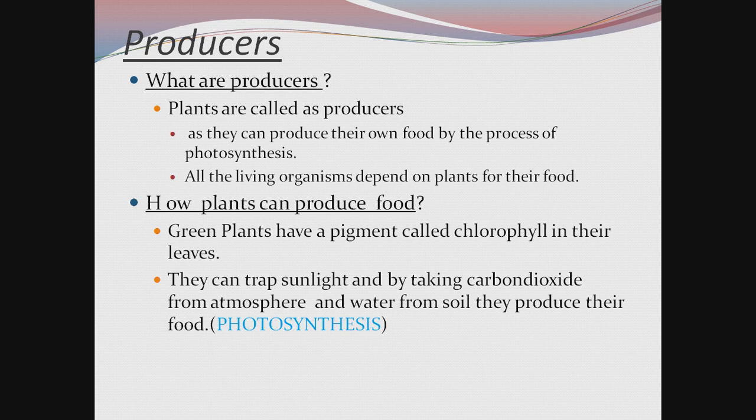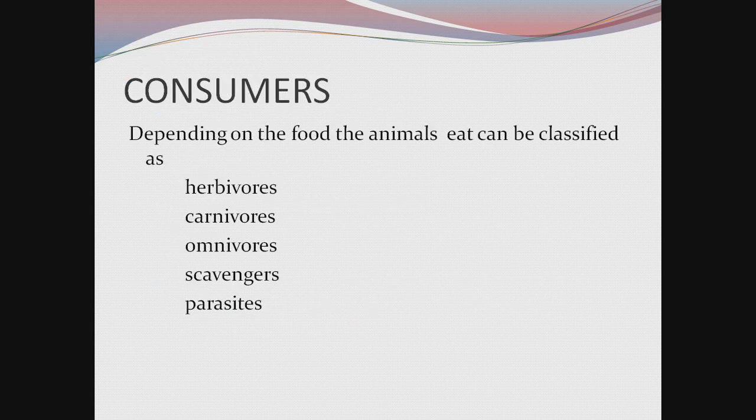The next question arises: why only plants can produce food, or how can plants produce food? Green plants have a pigment called chlorophyll in their leaves or the green parts. They can trap sunlight, and by taking carbon dioxide from the atmosphere and water from the soil, they produce their food. This process is called as photosynthesis.